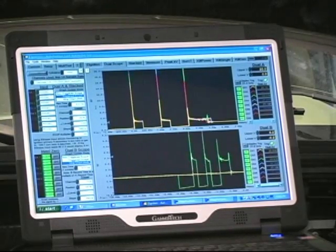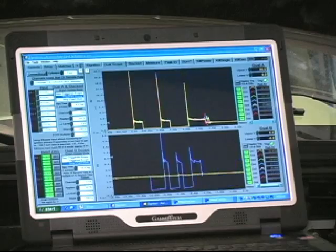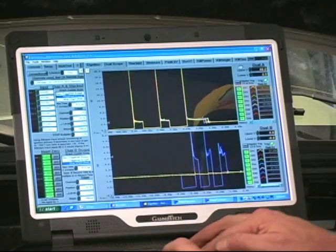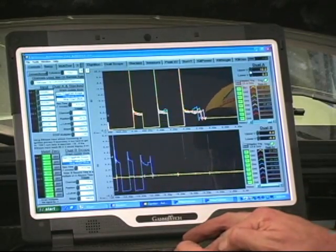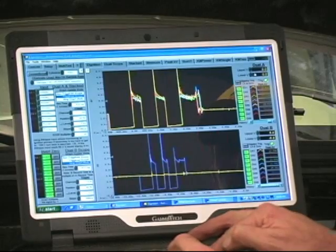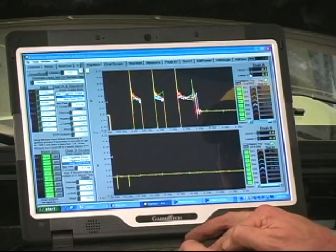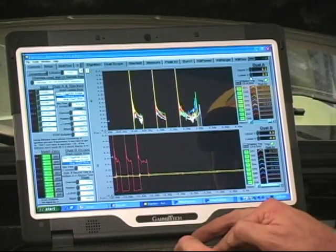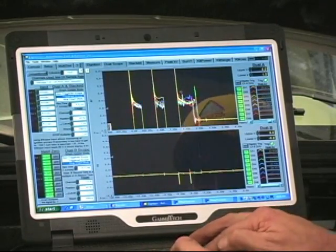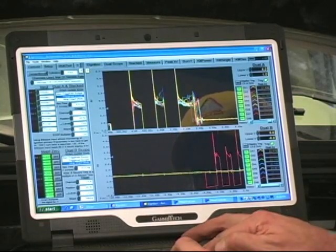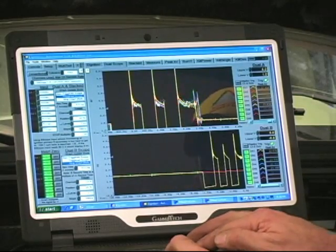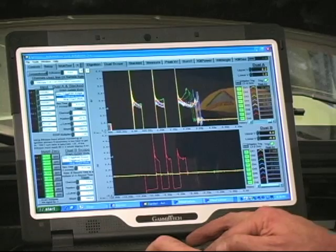Now that we've started this engine up, let's take a look at some of the data. We want to come over to the dual chart and bring this down so we got a little bit better look at what the waveforms are doing. What I'm interested in is these waveforms right here. So we want to see who's popping up and who's creating a problem.